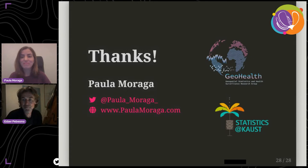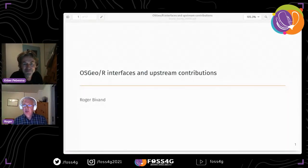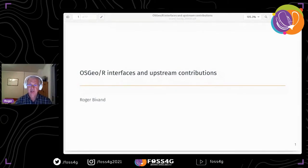Our next speaker is Roger Bivand. Roger is a professor at the Norwegian School of Economics, specializing in geographical information analysis, statistical programming, and spatial econometrics. He is author of numerous R packages including rgdal, sp, maptools, and rgrass7, and main author of 'Applied Spatial Data Analysis with R.' Roger will go behind the scenes and look at the links between OSGeo software and R.